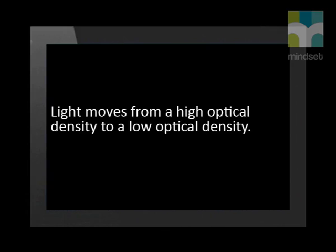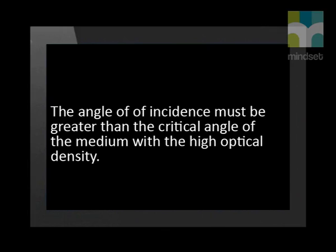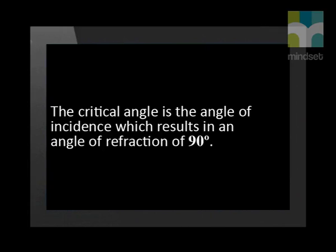Today we have learned that when light hits the boundary between two different media, such as water and air, it is possible for the light to be reflected back into the water so that the diver can see the shark. The conditions for this are: the light must be moving from high optical density to low optical density, and the angle of incidence must be greater than the critical angle of the medium with the high optical density. The critical angle is a special angle of incidence which results in an angle of refraction of 90 degrees, meaning the refracted ray runs parallel to the boundary.